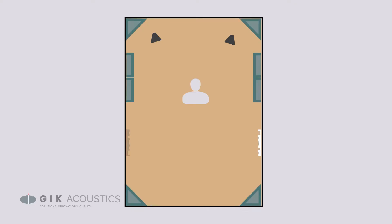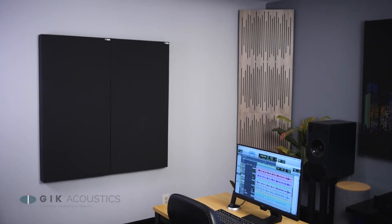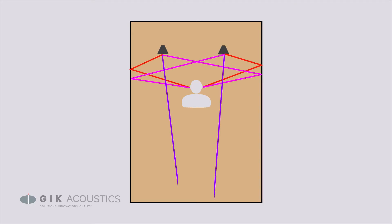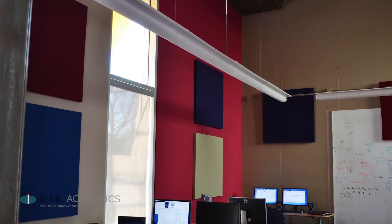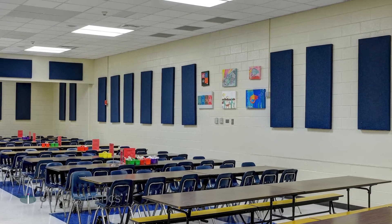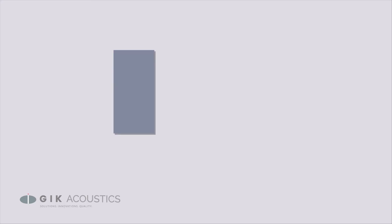The layout of your panels will vary greatly based on the kind of room you're trying to treat. We've done other videos on how to find your first reflections and where to focus treatment for various kinds of rooms. This video is going to deal more with general tips on how to space out your panels. This will be especially useful for large room acoustics like offices or educational environments.